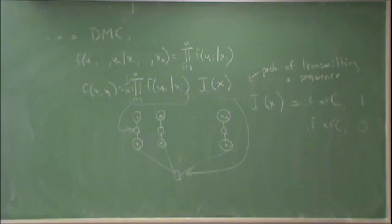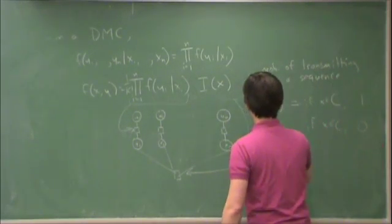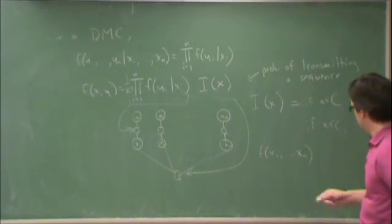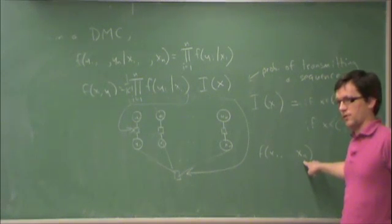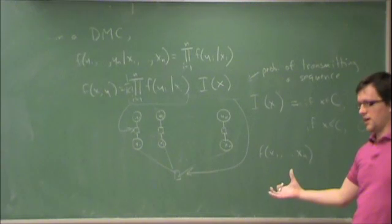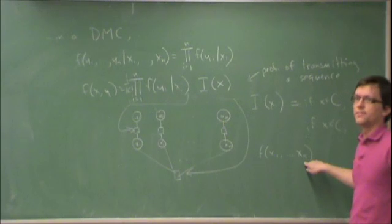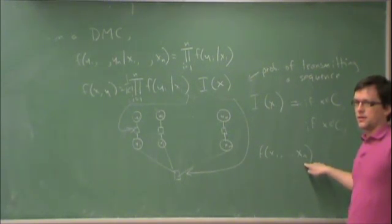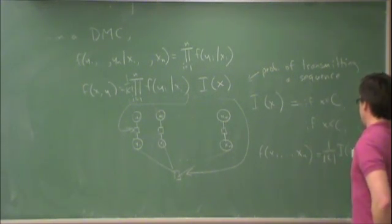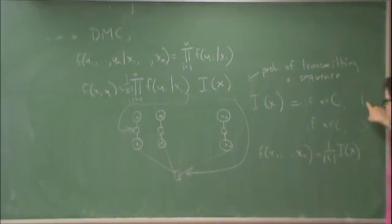What was 1 over cardinality of C? That was for each bit or the sequence? The term F of X1 through XN... This is the probability of a certain sequence, X1 through XN. So there are exactly cardinality of C allowed sequences. C is the code. So I'm only allowed to transmit sequences X1 through XN that are in the code, and each one of them is equiprobable. I can say this boils down to 1 over cardinality of C times my indicator function that I define here. This indicator function is 1 if the sequence is in the code and 0 otherwise.